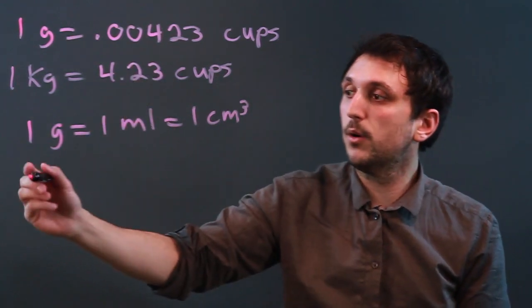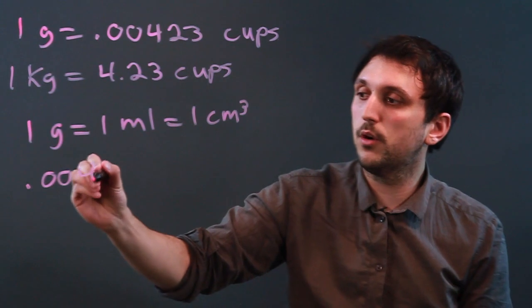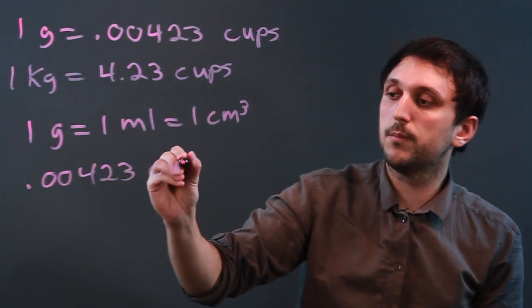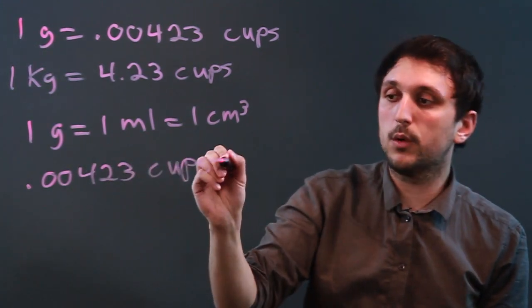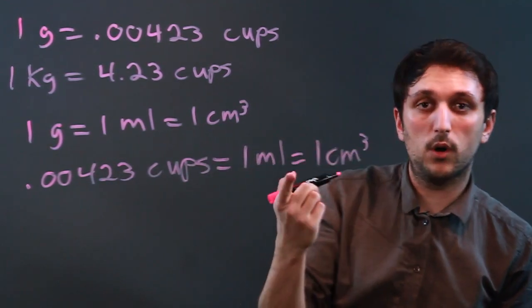So if we have 1 gram, that also means that .00423 cups of water equals 1 milliliter of water or 1 cubic centimeter of water.